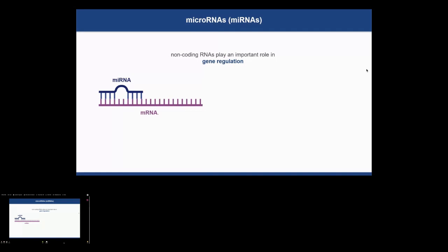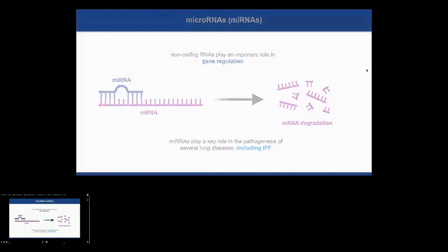Instead of being translated quickly into a protein, the marked mRNA will be either destroyed. Different microRNAs have been described in key genes and processes in the development of IPF, but the specific role in the disease needs to be further investigated.